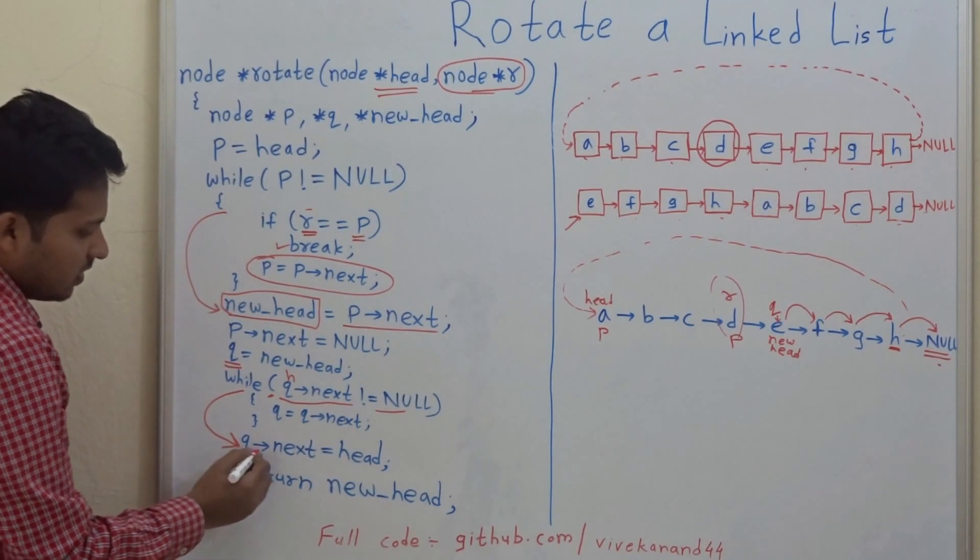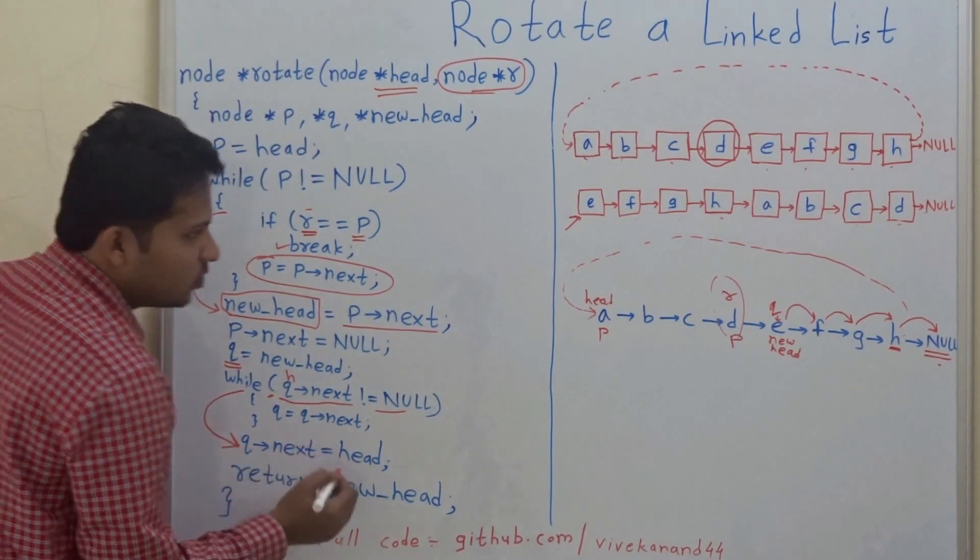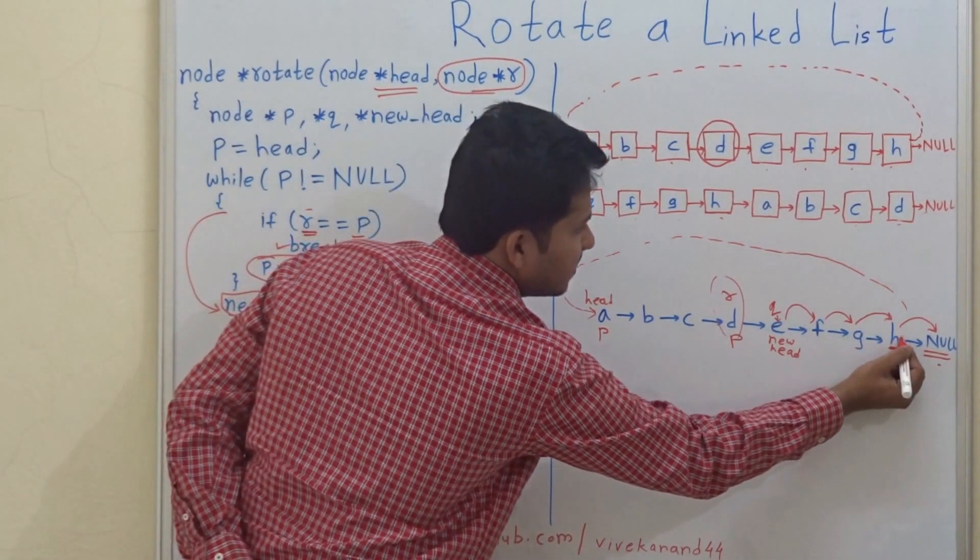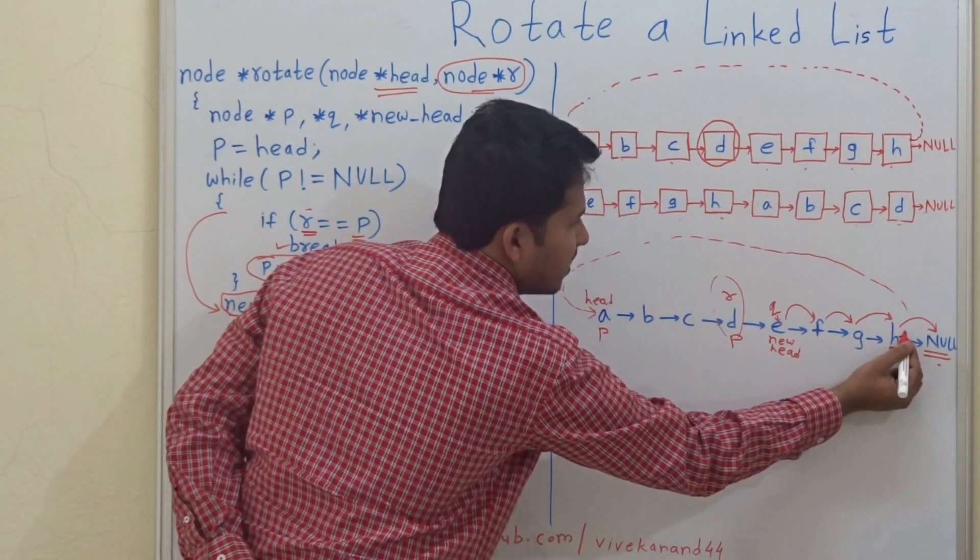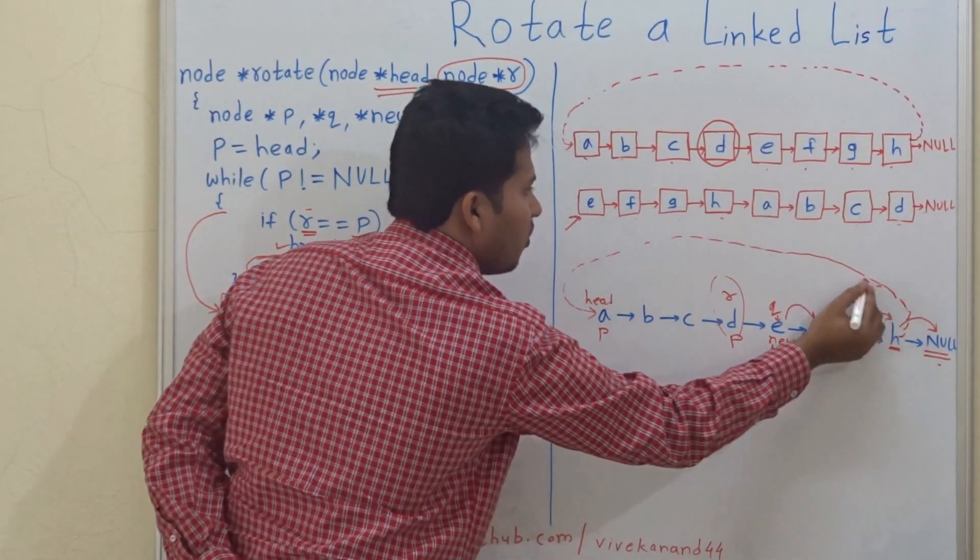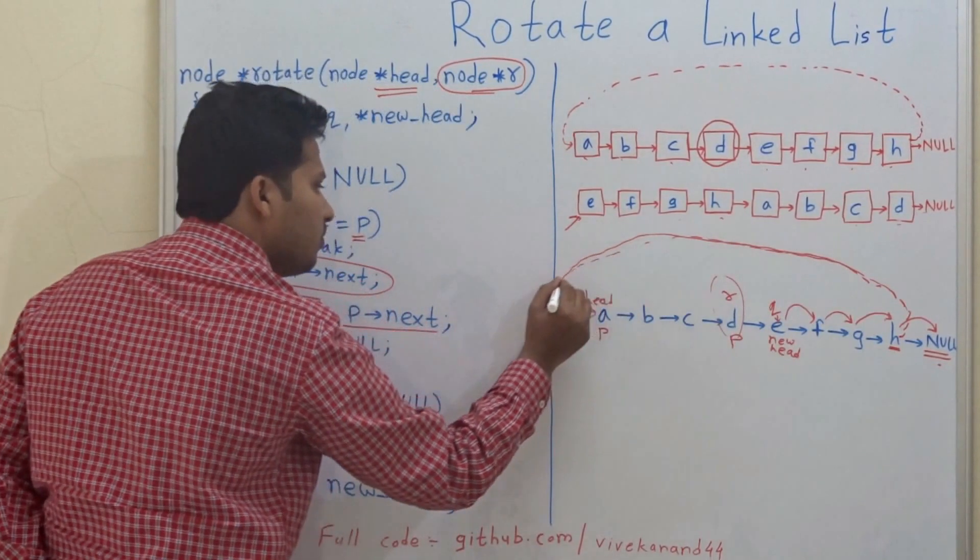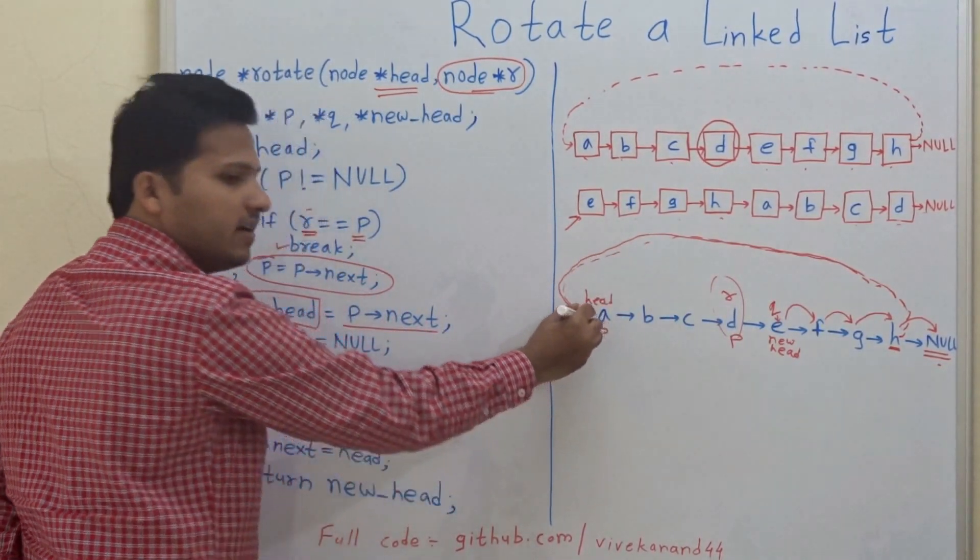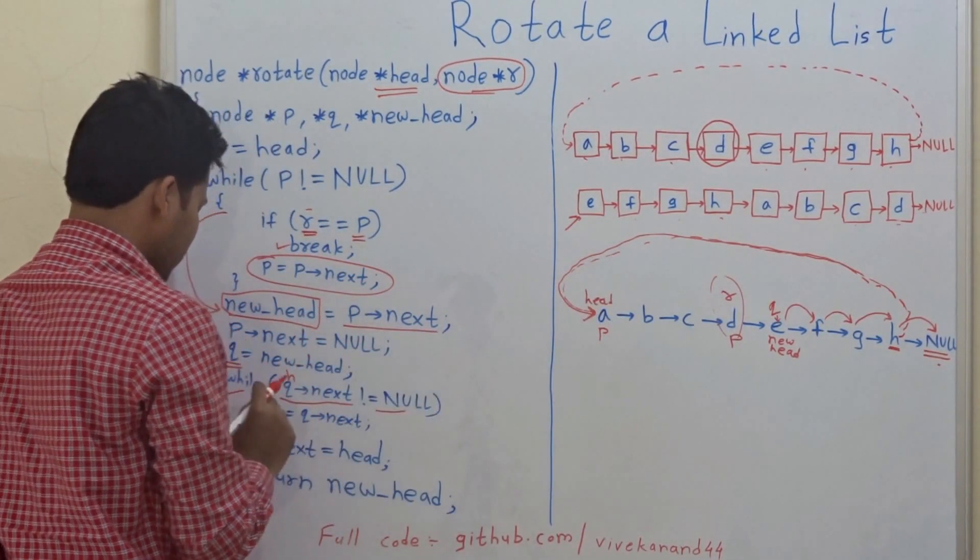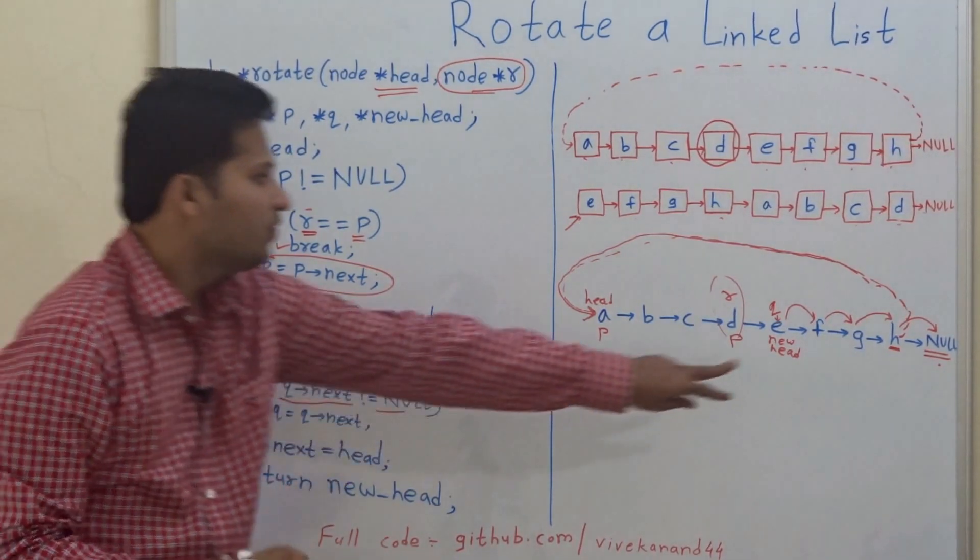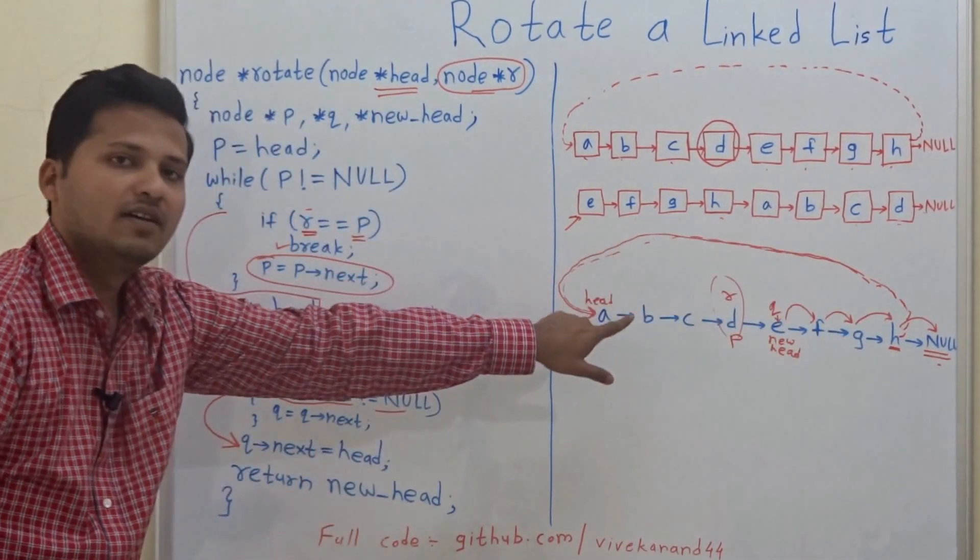And now, Q.next equal to head. Here is the thing: when we come to H, then the next pointer of H will point to the head node. So this is how we rotated the linked list.